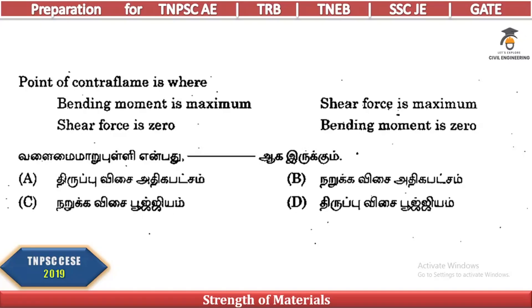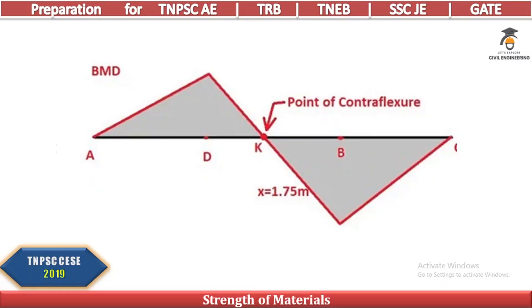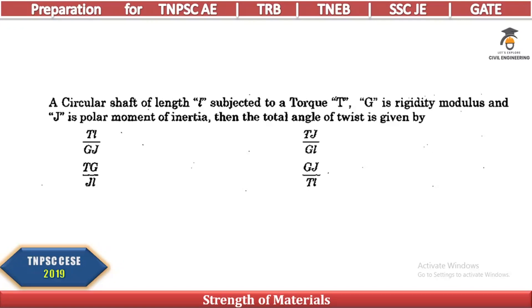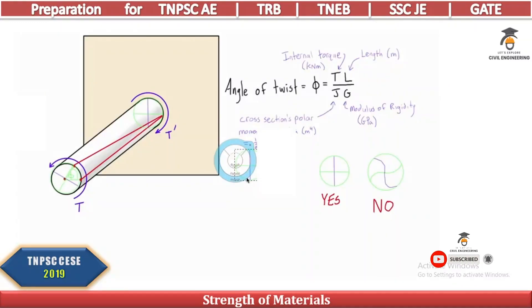The point of contraflexure is where the bending moment is zero and the shear force is not zero. At the point of contraflexure, bending moment equals zero. For a circular shaft of length L subjected to torque T, with rigidity modulus G and polar moment of inertia J, the angle of twist formula is TL / JG.